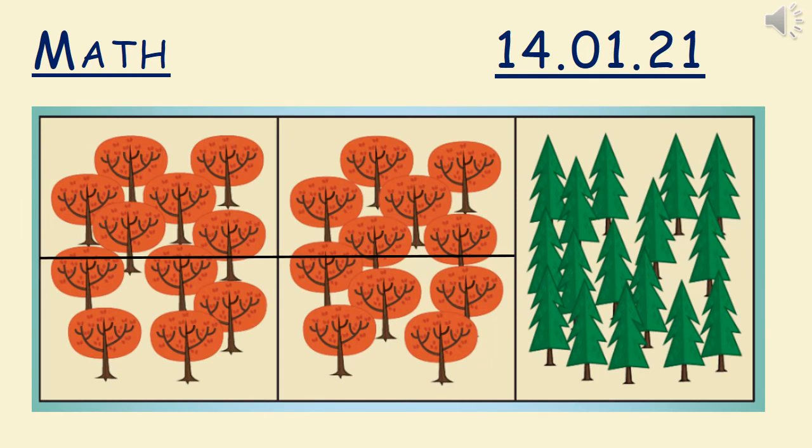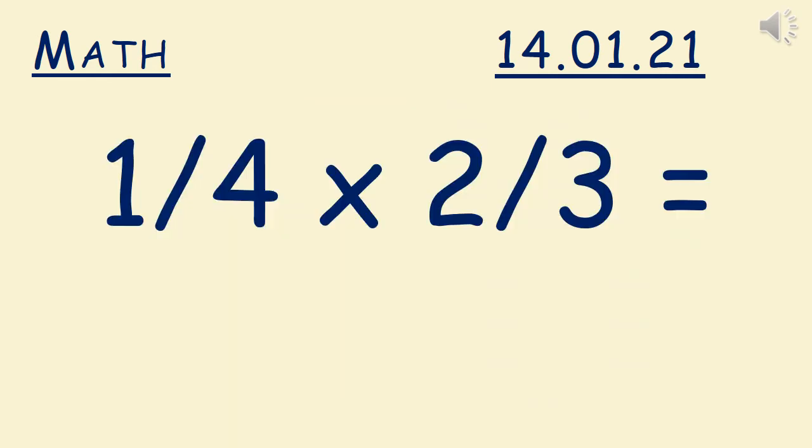I've divided the deciduous trees into quarters. So two thirds of the trees are now into quarters. So our number sentence should look like this: one quarter times two thirds equals what? Remember, this reads one quarter of two thirds.